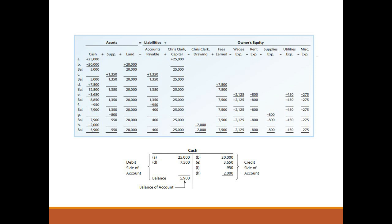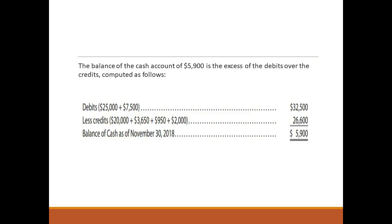This balance represents NetSolutions' cash on hand as of November 30, 2018. The balance of the cash account of $5,900 is the excess of the debits over the credits, computed as follows: debits, $32,500; less credits, $26,900; so the balance of cash as of November 30, 2018 is $5,900.